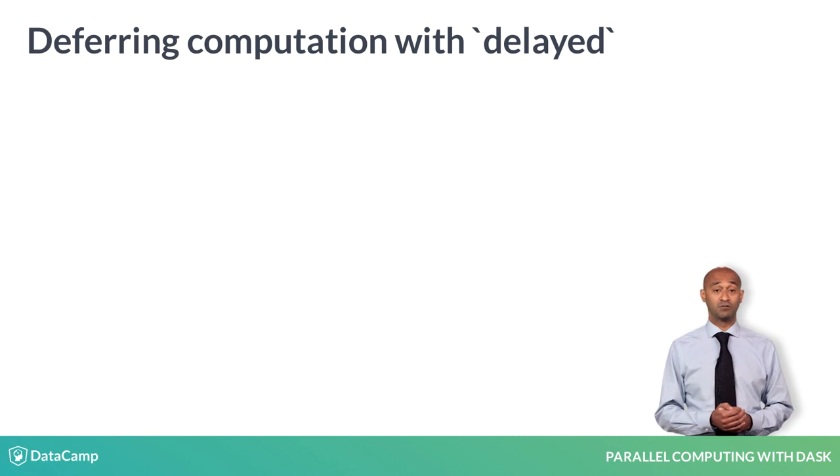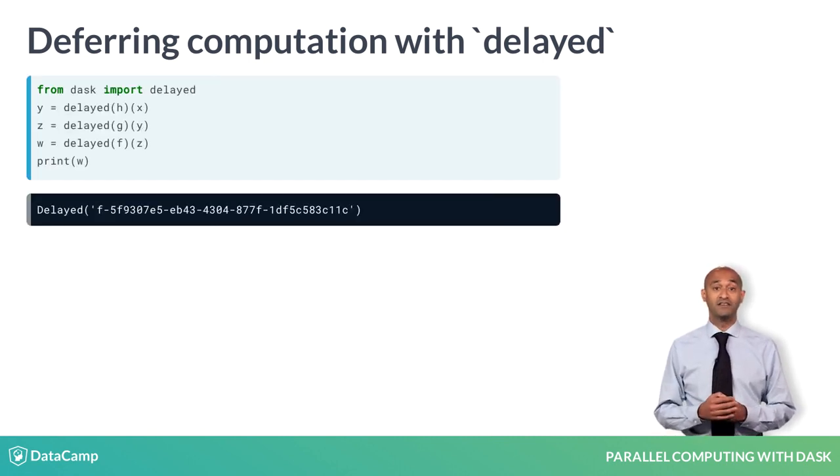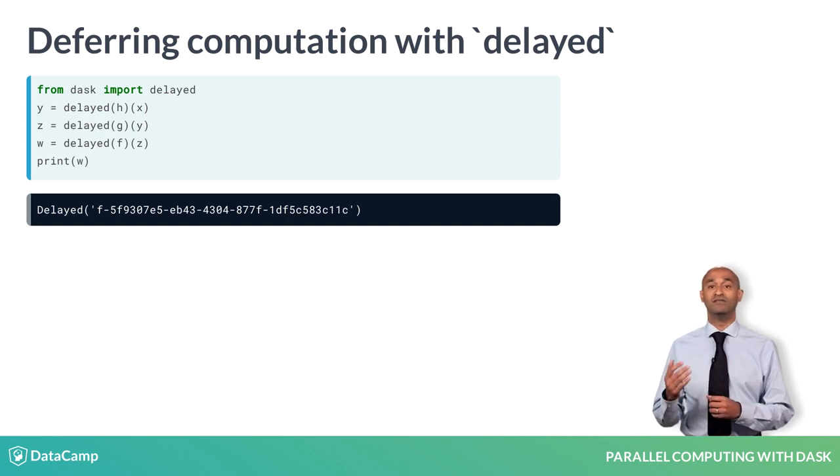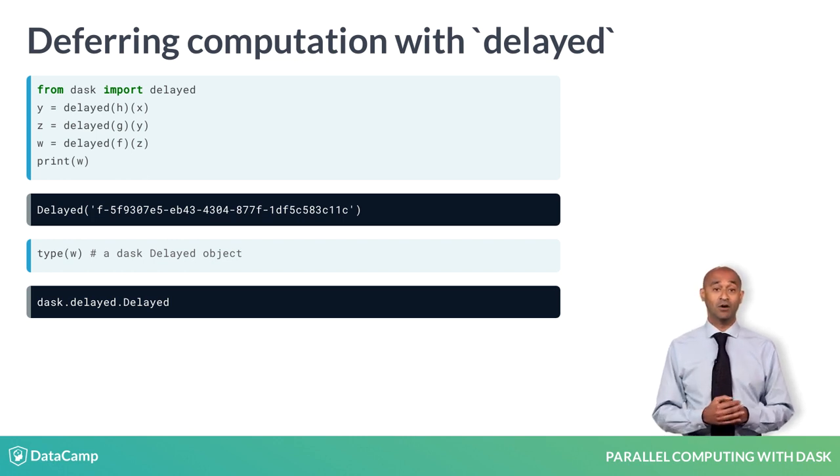We'll repeat this computation using Delayed from the Dask library. This is a higher order function, or a decorator function, that maps an input function to another modified output function. The value of W, then, is delayed of F of delayed of G of delayed of H of 4. If we examine W, it is a Dask delayed object rather than a numerical value.